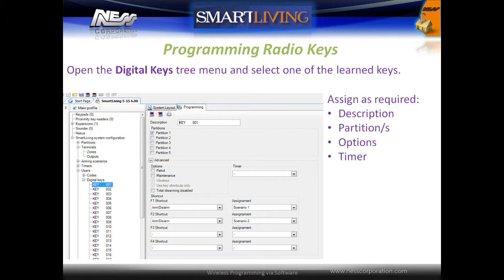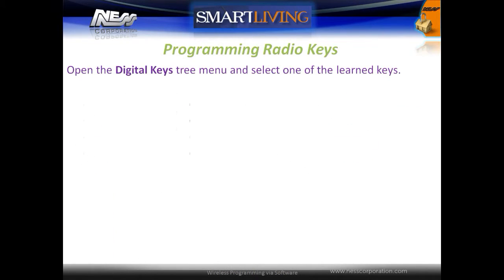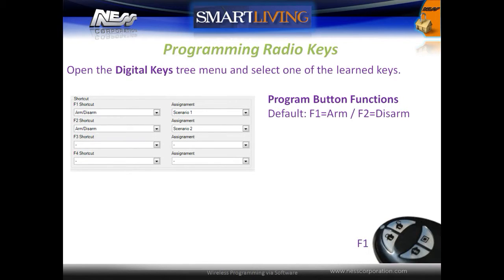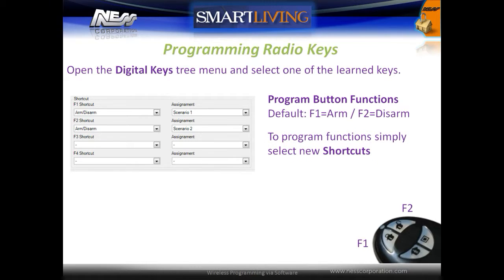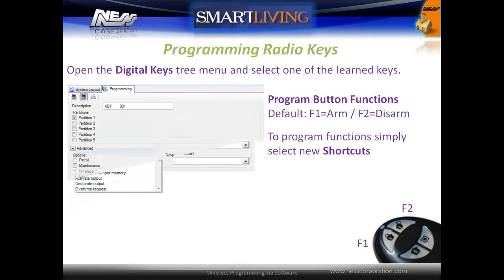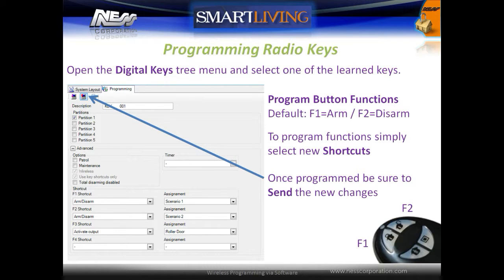To configure a key, open the digital keys tree menu and select one of the learned keys. Assign a description, select the partitions the key belongs to, set any options for the key, and optionally a timer can be applied to enable and disable a key on a schedule. The four function key shortcuts apply to the four radio key buttons. By default, the F1 and F2 buttons are mapped to arming scenarios one and two, which will arm and disarm the system. To program new functions, simply select the new shortcut for the button — this will need to be applied to each radio key. Once any changes have been programmed, be sure to send the changes to the system to apply.